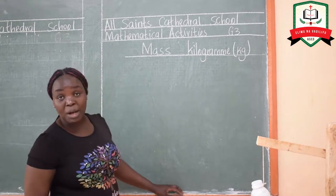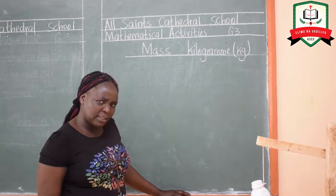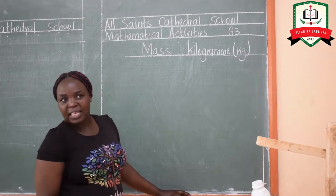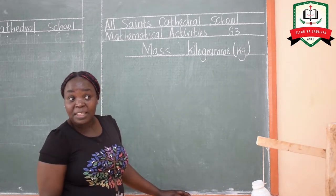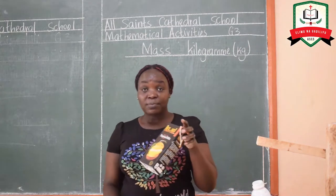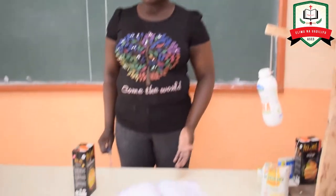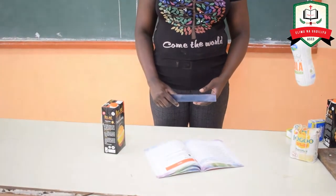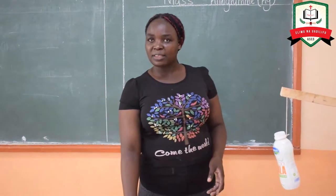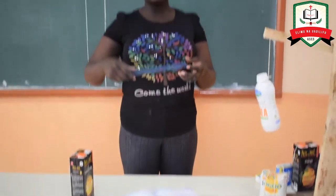Today we want to talk about mass. What is mass? Mass is the weight of objects, and an object is something that can occupy space. For example, this box — when I put it here, the space is taken. That means it has weight. Even this ruler, it occupies space, so it has weight. So, mass is the weight of objects.